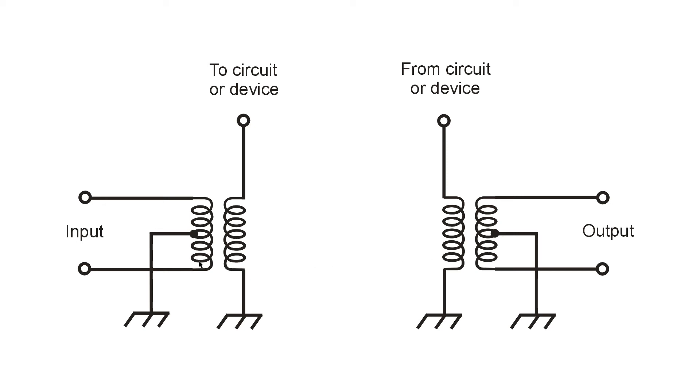Ham radio operators typically call either of these types of transformers baluns, meaning balanced to unbalanced. Although technically this is a balun, and that is an unbal.